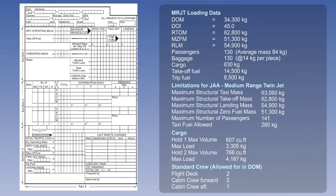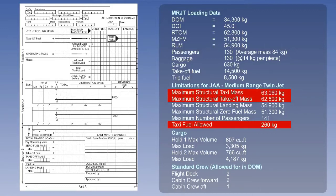Starting with Part A, with a given set of data on screen, we will work through an example to eventually establish the relevant centre of gravity positions in Part B. There is no provision to consider the maximum structural taxi mass in the load sheet, but as we learnt previously, it is a limitation. In this case, the taxi fuel allowed for is 260 kilograms — the difference between maximum structural take-off mass, 62,800 kilograms, and maximum structural taxi mass, 63,060 kilograms. Because there are no performance limitations for take-off and landing, the regulated limiting mass is the maximum structural take-off mass, 62,800 kilograms, and the maximum structural landing mass, 54,900 kilograms.